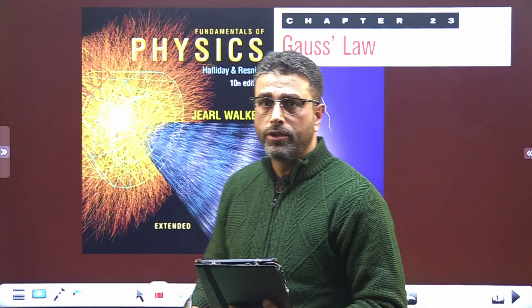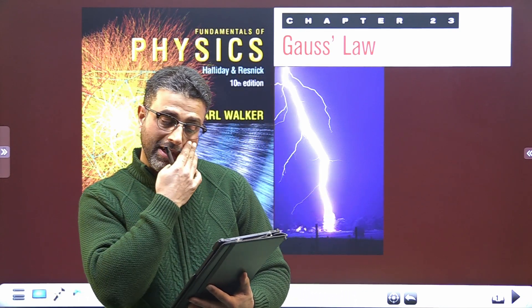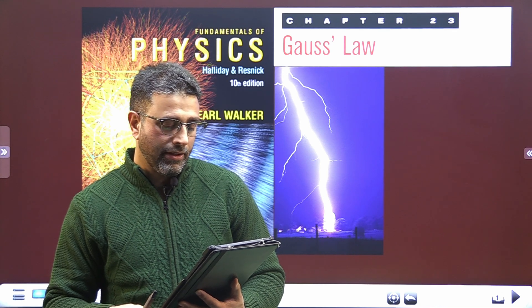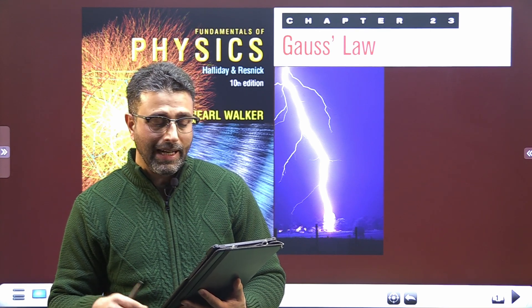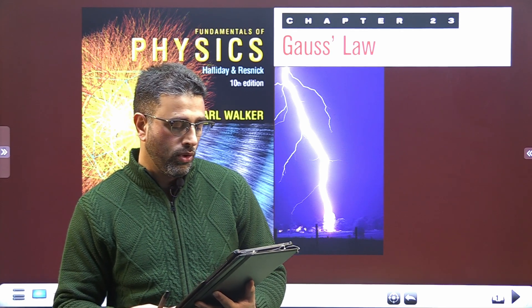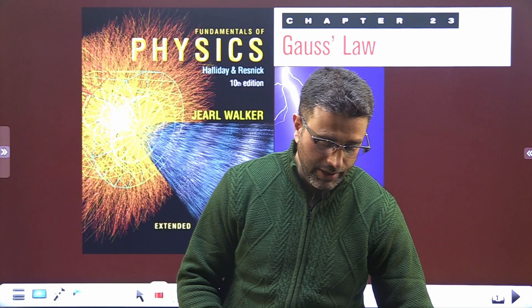Assalamu alaikum warahmatullah. Call number 42, Gauss law chapter 23. Let me read out the question: Two large metallic plates of area 1 square meter face each other, 5 cm apart, with equal charge magnitudes Q but opposite signs. The field magnitude E between them, neglecting fringing, is 55 Newton per coulomb. Find charge Q.